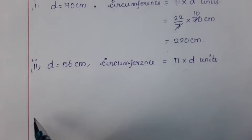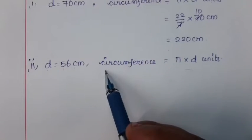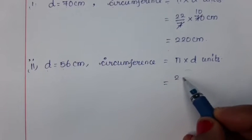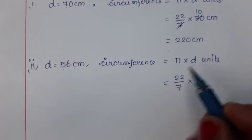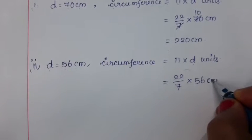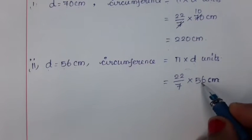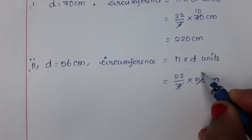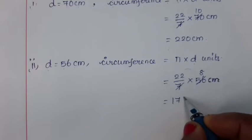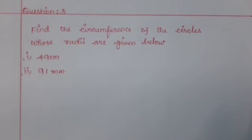Now let us see the answer for the second subdivision. The given diameter is equal to 56 centimeters and the circumference is equal to π into d units. We know that the value of pi is equal to 22/7 and the value of d is 56 centimeters. By dividing 56 by 7 we get 8. By multiplying 22 by 8 we get 176 centimeters, which is the required circumference of the circle.